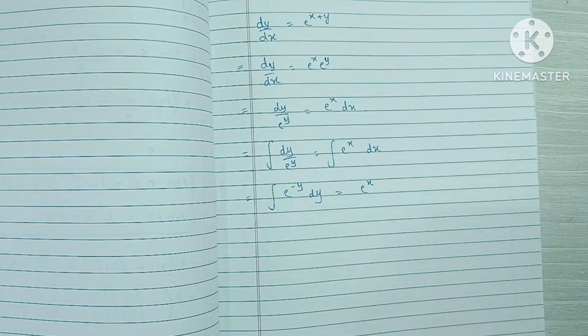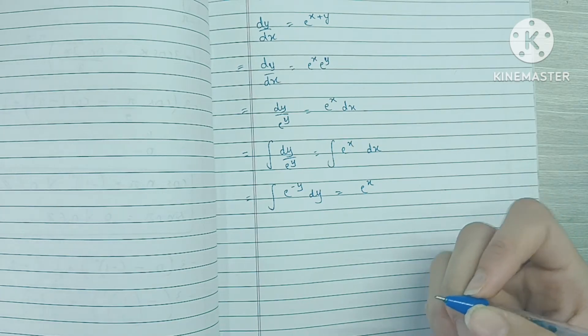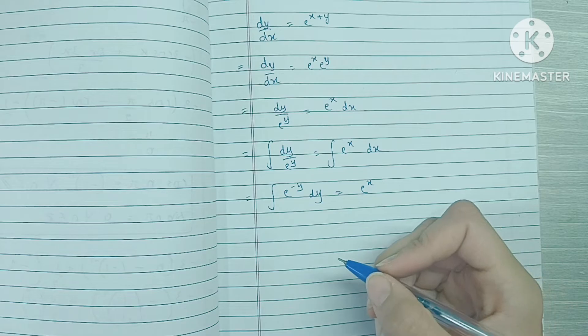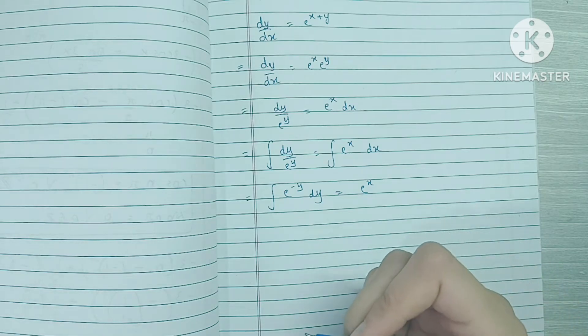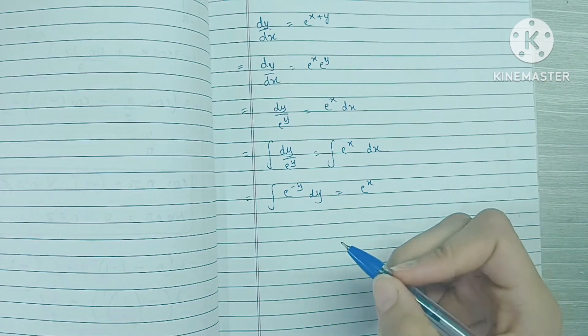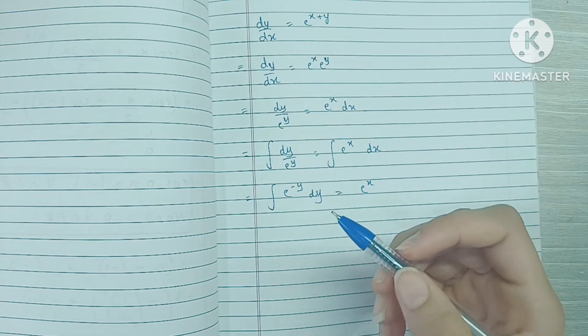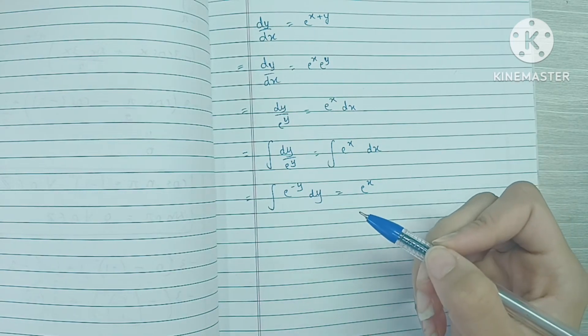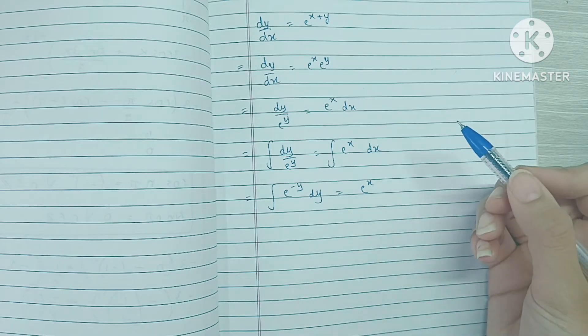The differentiation of e raised to minus x would be minus e raised to minus x. So it means that we multiply the coefficient of x. That means that the integration of e raised to minus x would be e raised to minus x upon minus 1, which is ultimately minus e raised to minus x.